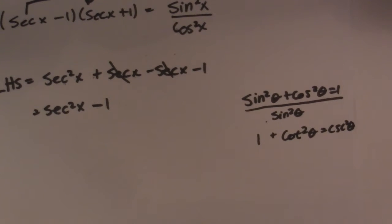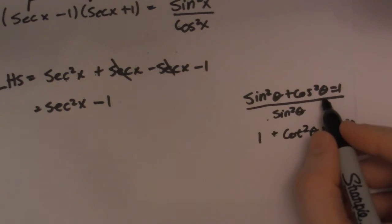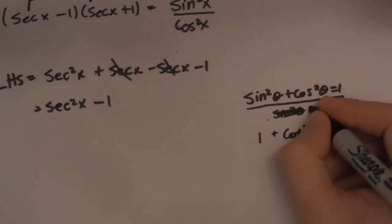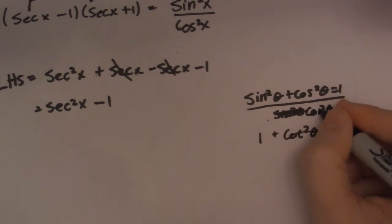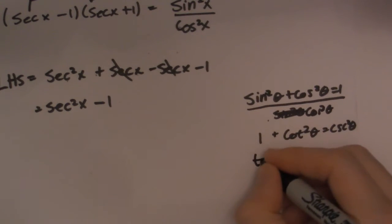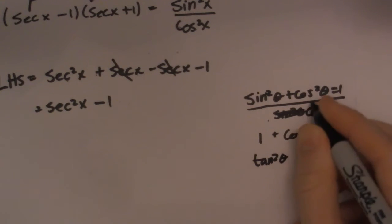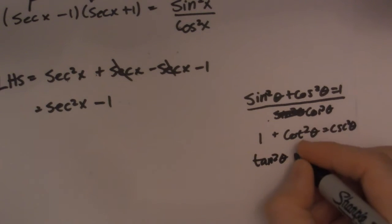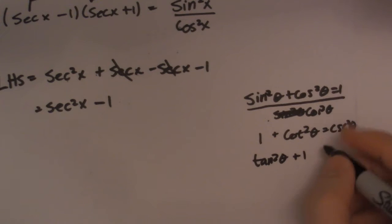Now, if I do that again, except I do it for cos squared theta. So cosine squared divided by cos squared is tan squared theta. Cos divided by cos is one. And then one divided by cos squared is secant squared theta.